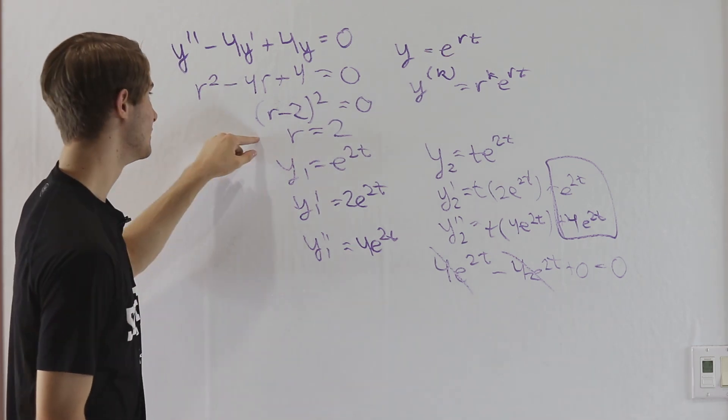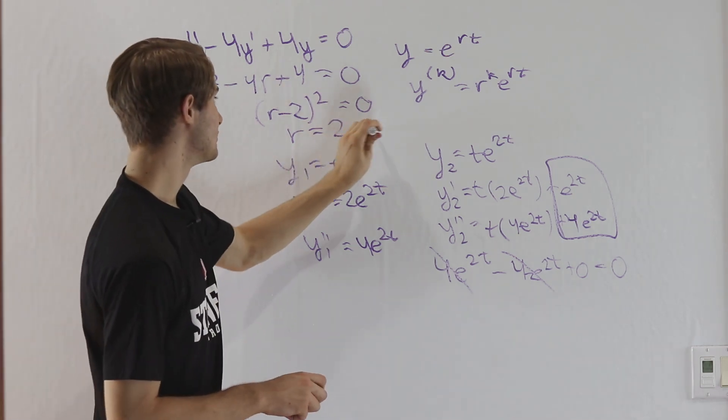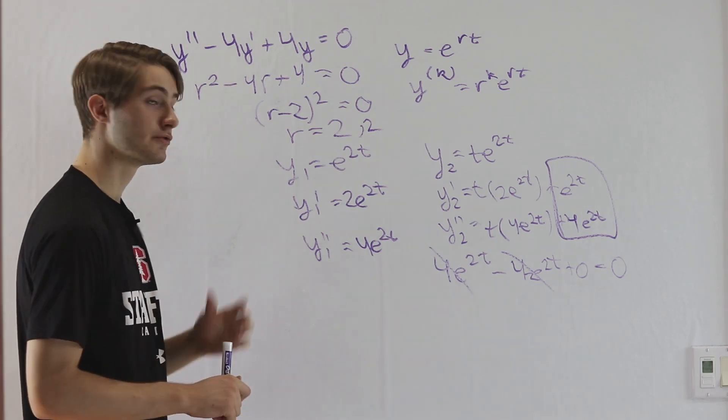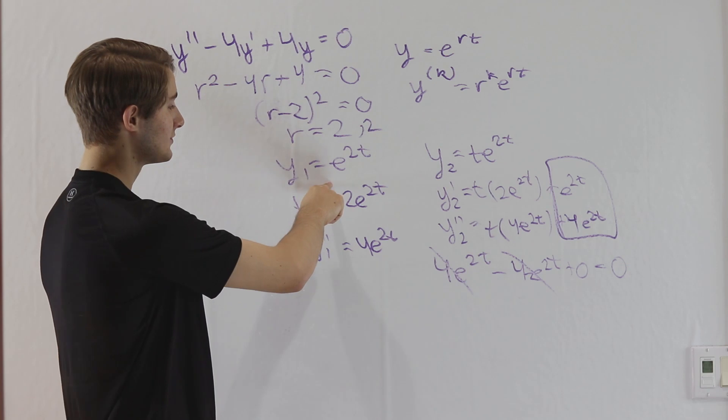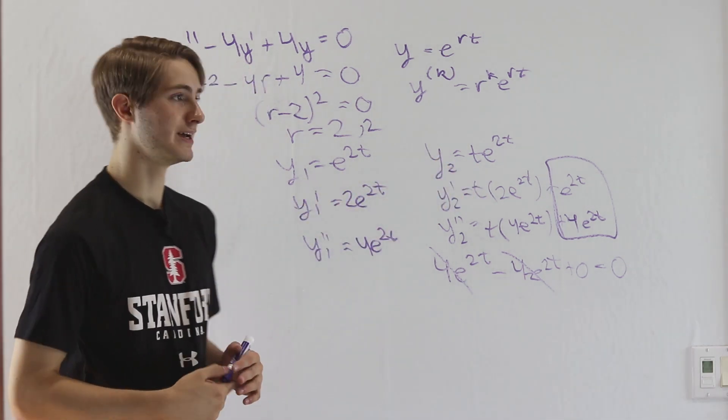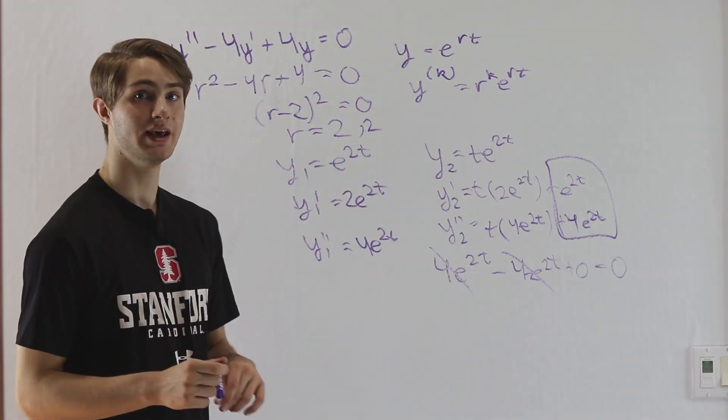So any time you have a double root in your characteristic polynomial, you get r equals 2 and 2, something like that, your first solution is going to be what you expect, e to the 2t. Your second solution will be the same, but with a t multiplied on the left just like that.